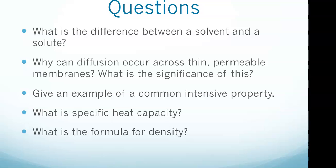I think we covered all of those. The formula for density we mentioned towards the beginning of the video. Specific heat capacity is the amount of energy required to change the temperature of one gram of a substance by one degree. I would be prepared for having to know that. And we just talked about diffusion going across thin permeable membranes, the significance being that individual molecules are small enough to pass through.